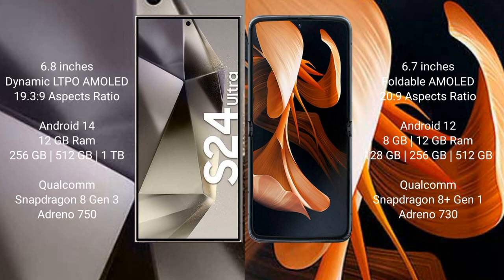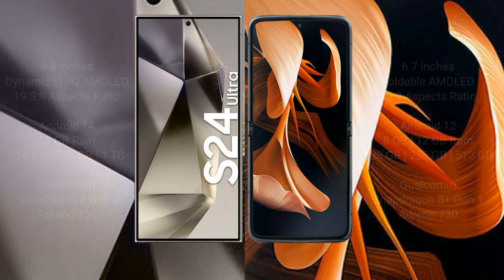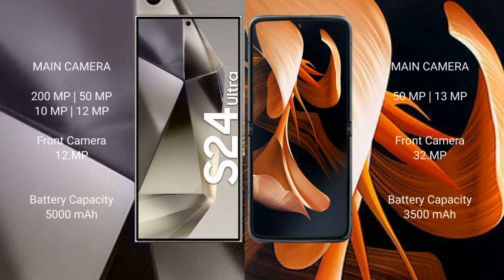Samsung Galaxy S24 Ultra comes with 12GB RAM and 256GB, 512GB, 1TB internal storage, Qualcomm Snapdragon 8 Gen 3 processor, and GPU Adreno 750. Motorola Razr comes with 8GB or 12GB RAM and 128GB, 256GB, or 512GB internal storage, Qualcomm Snapdragon 8 Gen 1 processor, and GPU Adreno 730.